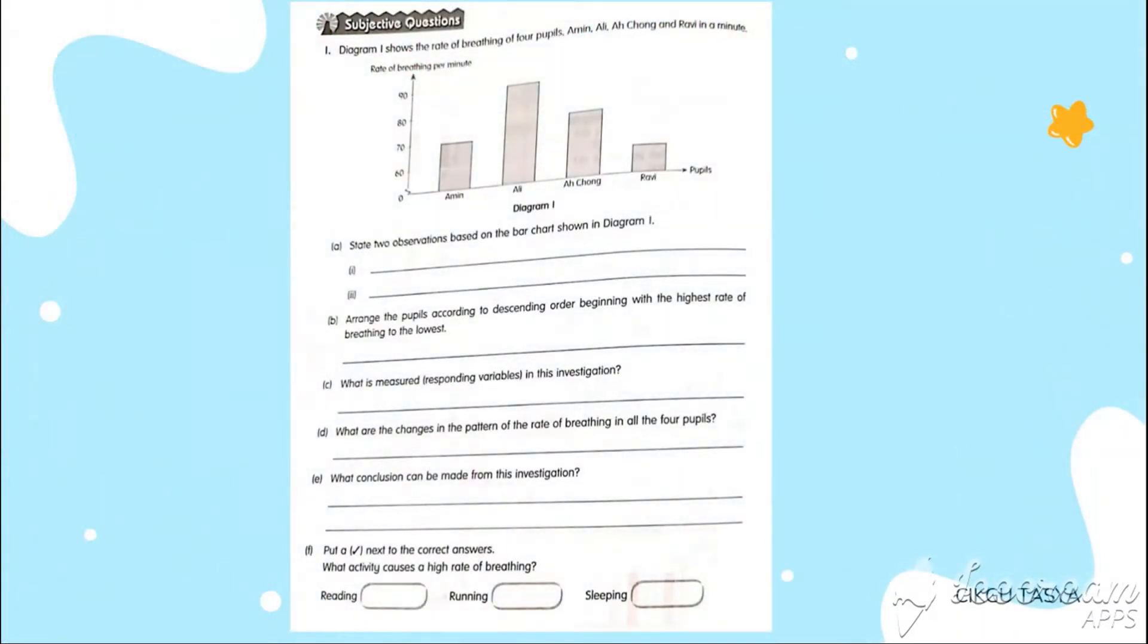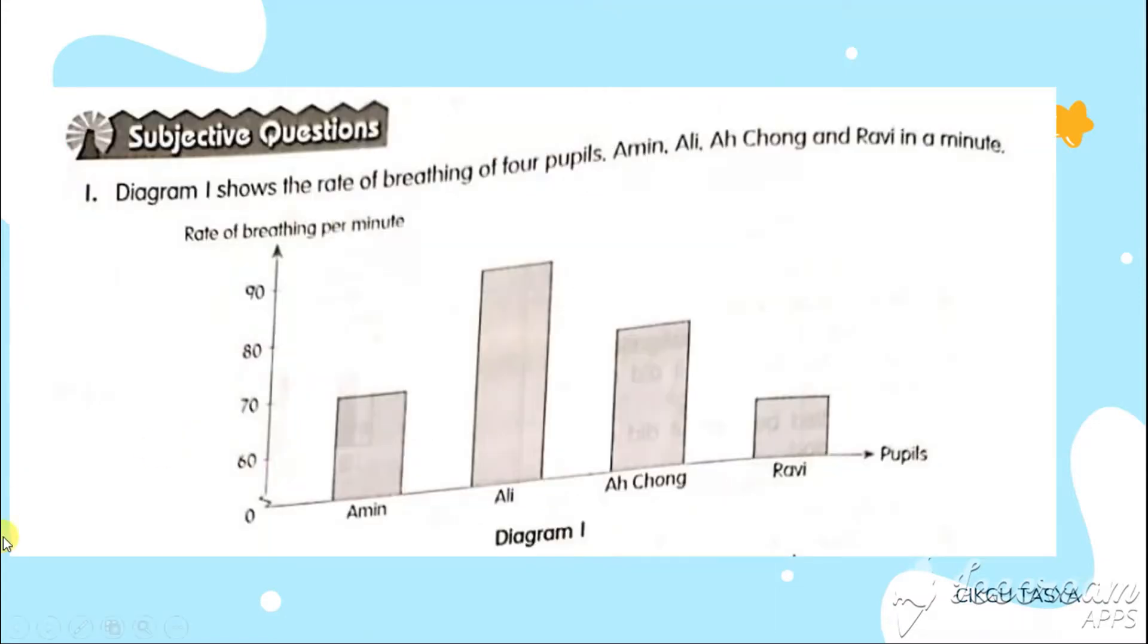Let's continue. We will be looking at 2 questions. This is one of the questions. From this question, you know, they are going to ask about observations, orders, variables, patterns, conclusion, everything. Let's start. You can look at the question. You always have to read the instruction above. Always read this instruction. Don't ever skip this instruction. It's very important.